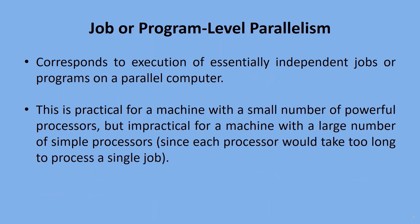Job or Program Level Parallelism corresponds to the parallel execution of essentially independent jobs or programs on a parallel computer. The grain size can be as high as millions of instructions in a single program. Job level parallelism is handled by the program loader and by the operating system.